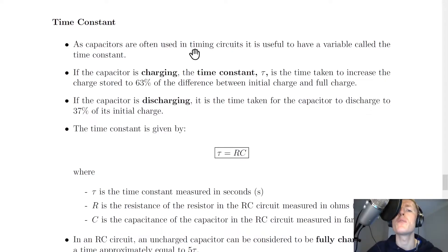As capacitors are often used in timing circuits, it is useful to have a variable called the time constant. If the capacitor is charging, the time constant tau is the time taken to increase the charge stored to 63% of the difference between initial charge and full charge. Or if the capacitor is starting at zero coulombs, it's the time taken to increase the charge stored to 63% of the full charge.